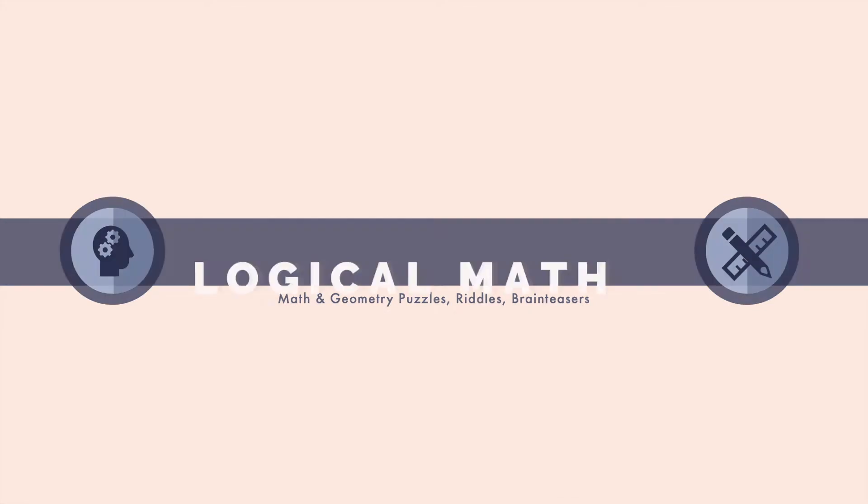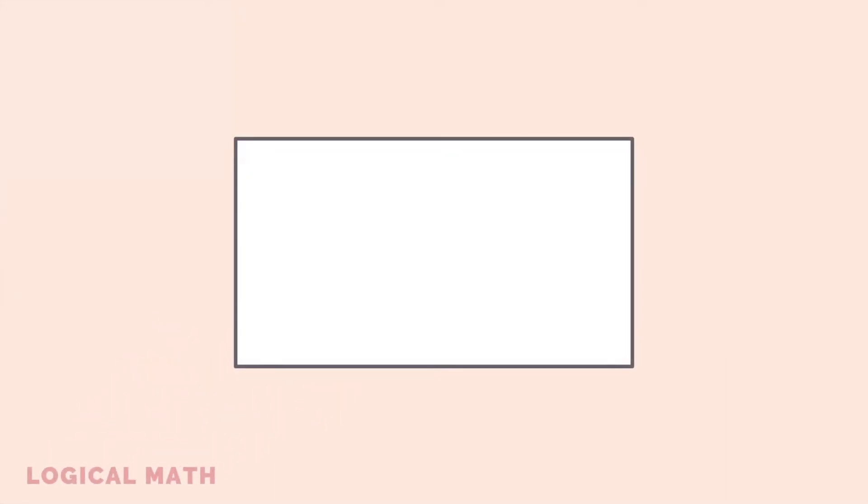Hey guys, you're watching a new video on Logical Math channel. The large rectangle was divided into three smaller rectangles by two lines, so that the total width of the left and middle rectangles is 8 centimeters, and the total width of the middle and right rectangles is 9 centimeters.